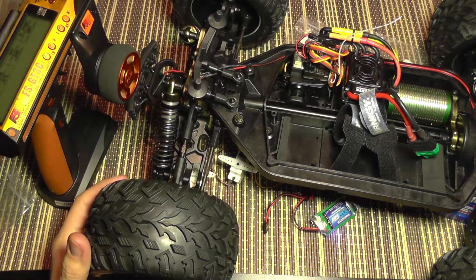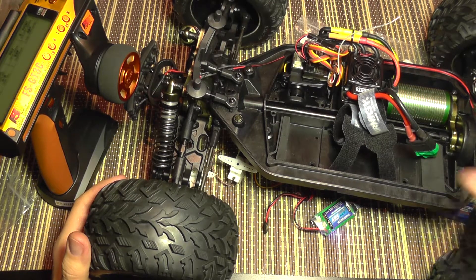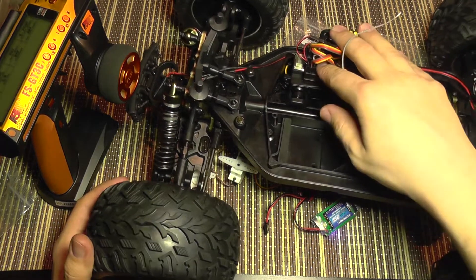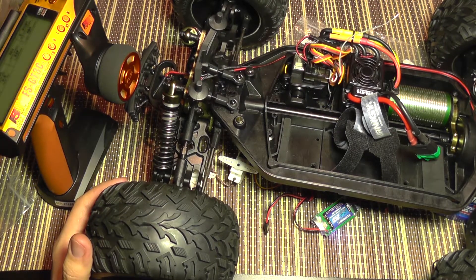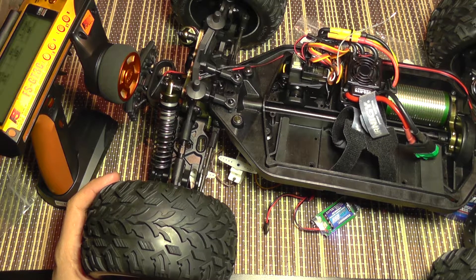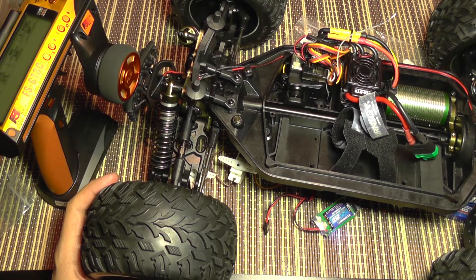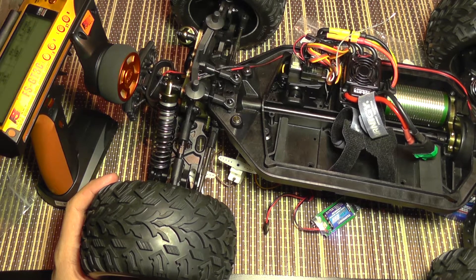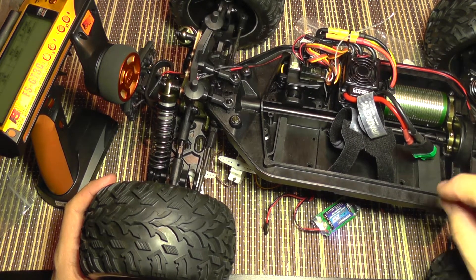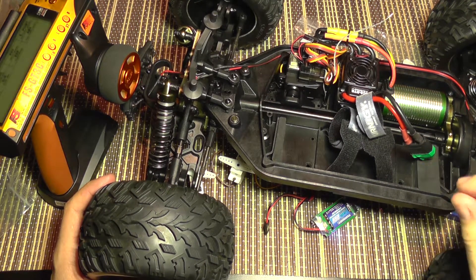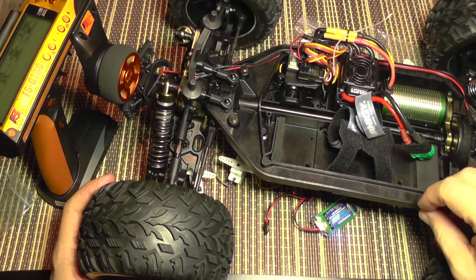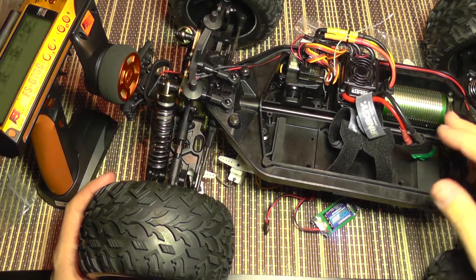Until I add more channels to this transmitter, my plan is to use it with this model. It's the Vicar Bison. This has a four channel receiver but it only has a two channel transmitter.